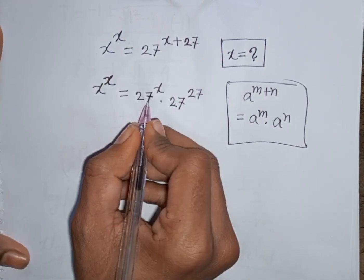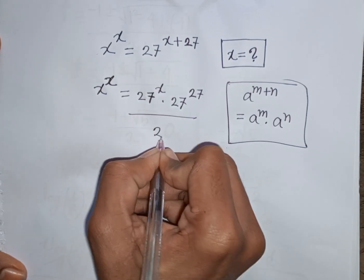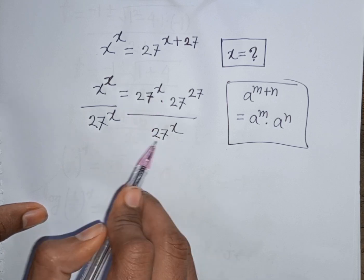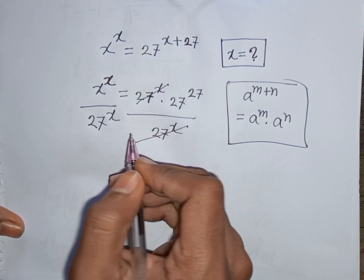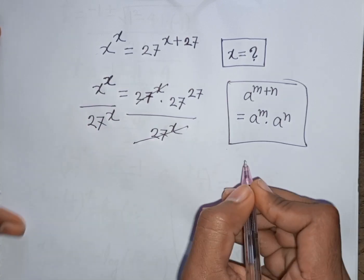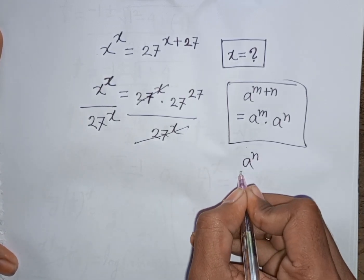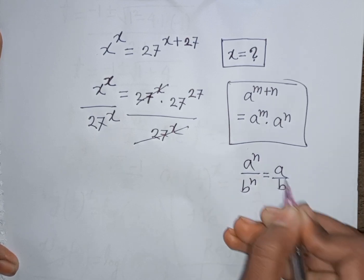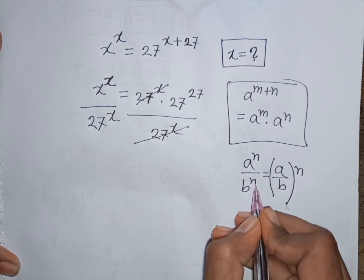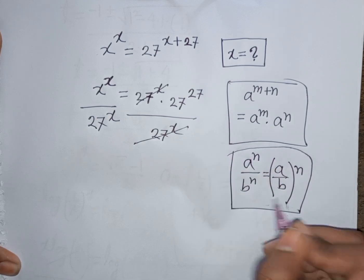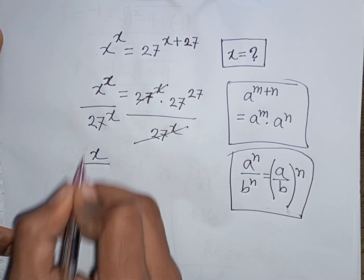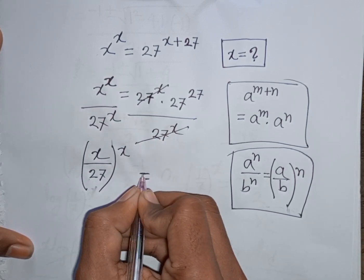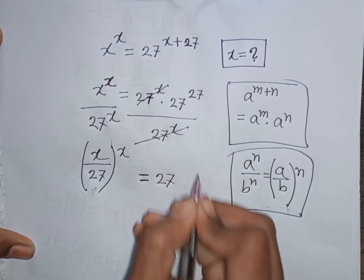Now we divide both sides by 27 power of x. This 27 power of x will be cancelled. We notice x and 27 share the same power but are different bases. Applying the rule that a power n over b power n equals a over b bracket power n, we can write x over 27, bracket power x, is equal to 27 power of 27.